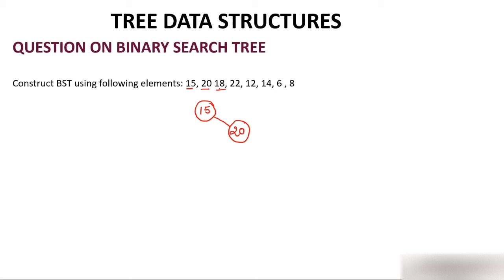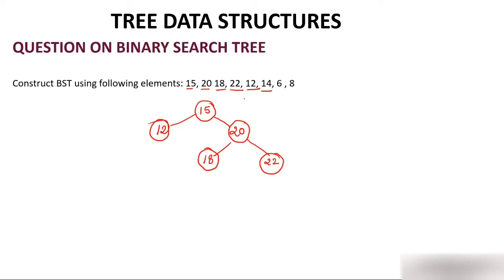Compare 18 with 15 first at the root. Is 18 greater than 15? Yes. Then compare with 20. Is 18 greater than 20 or less than 20? Less, so 18 comes to the left of 20. Next, 22: compare with root 15 - greater. Compare with 20 - greater, so 22 comes to the right of 20. Next, 12: compare with 15 - smaller, so 12 becomes the left child of 15. Then 14: compare with 15 - smaller, go left. Compare with 12 - greater than 12, so 14 comes to the right of 12.